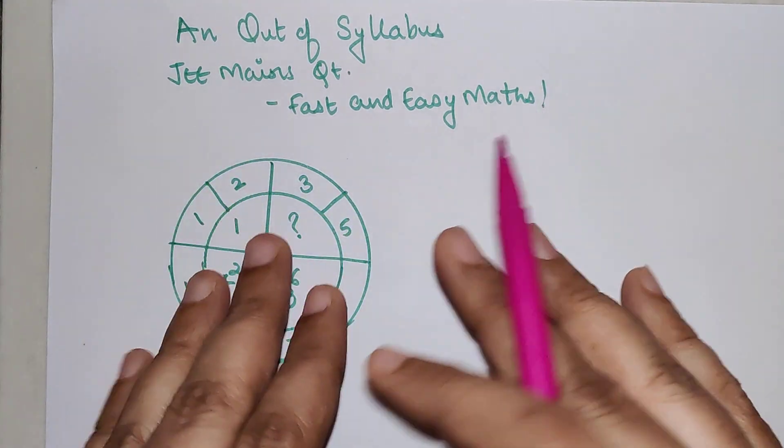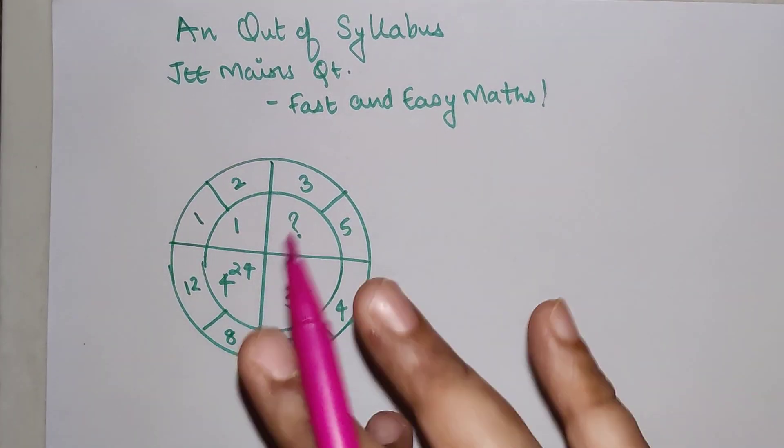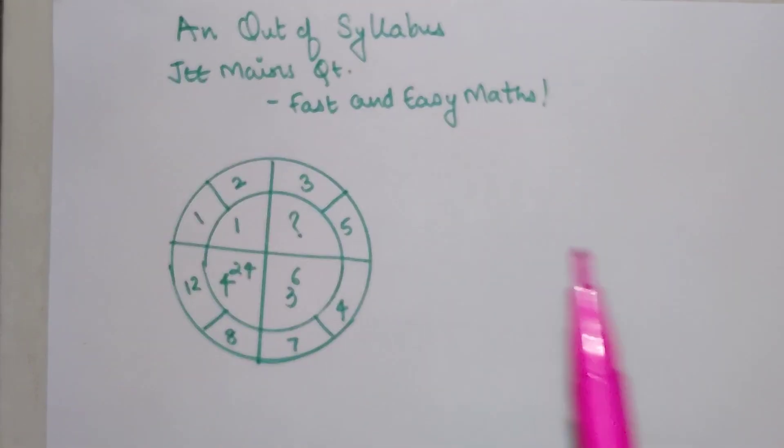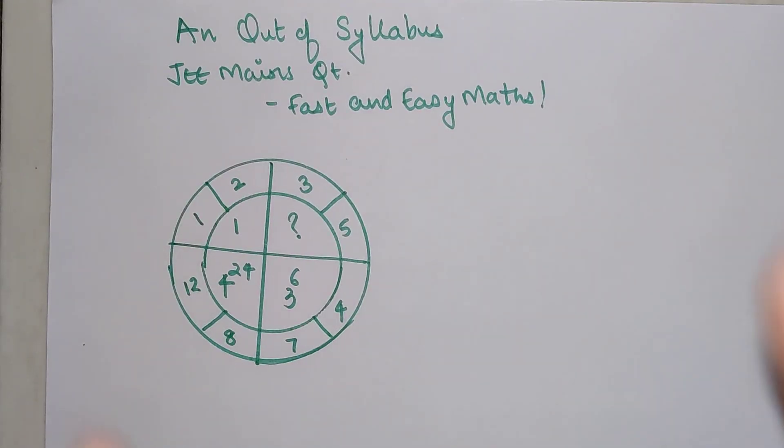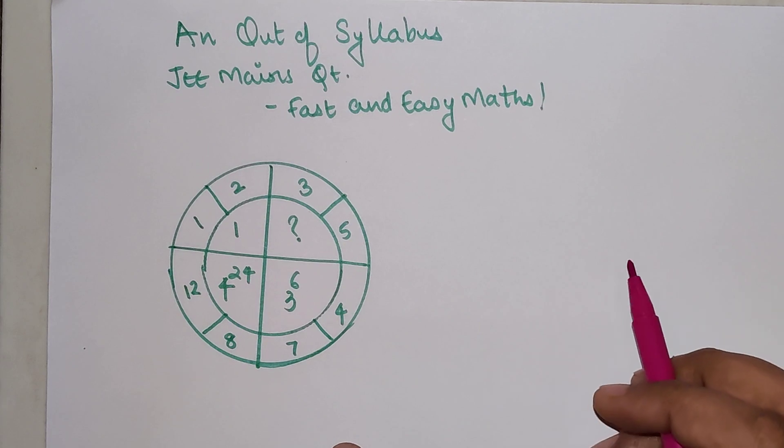So whenever you come across something which is different then you should understand it is equally going to be easy. You just have to use your basic aptitude knowledge and you will get to know how to solve this kind of a question.